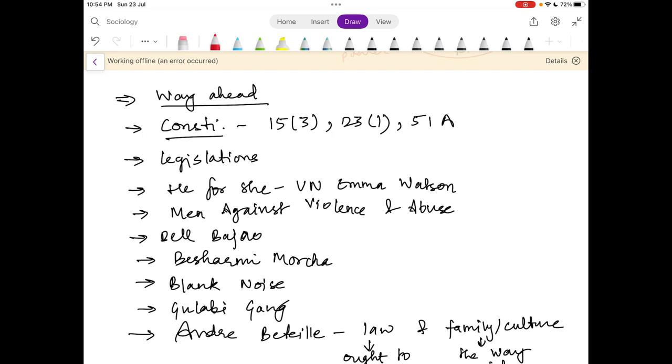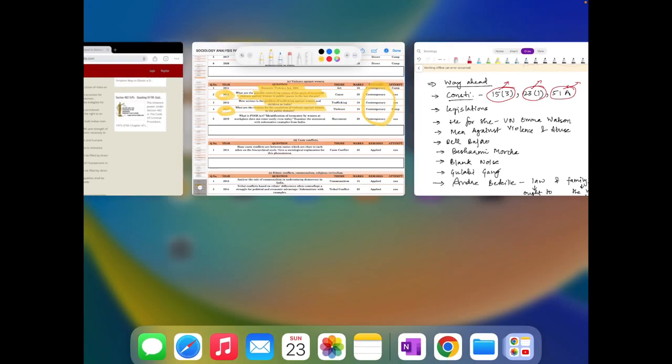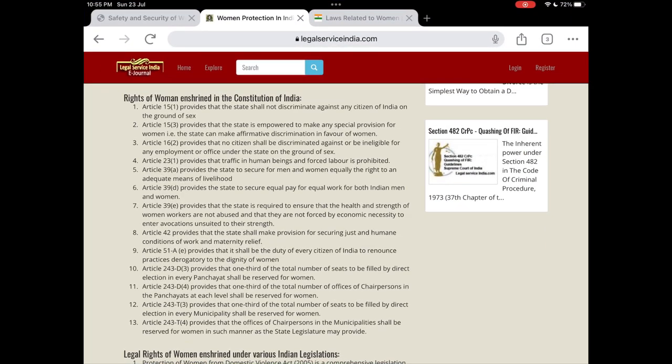When we are talking about the way ahead, I have divided it into some of the initiatives and the constitutional and legislative framework. You can quote the existing constitutional frameworks: Article 15 Clause 3, Article 23 Clause 1, Article 51 fundamental duties. Article 15 Clause 3 is where government can take any affirmative act for vulnerable sections like women. Article 23 Clause 1 deals with the prohibition of prostitution and trafficking in women and children. In fundamental duties, there is a specific fundamental duty that talks about renouncing practices that are derogatory to women.